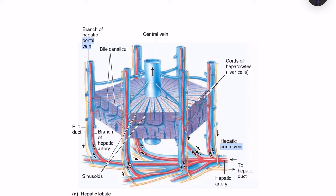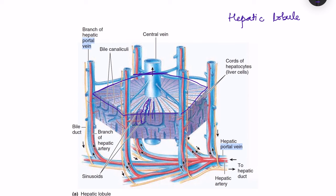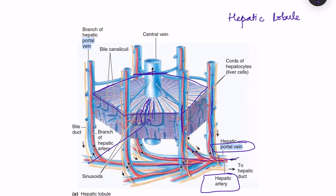This diagram shows a hepatic lobule, which is a hexagonal structure. Within it, various hepatocytes are arranged as plates — two plates of cells with a bile duct in between. The hepatic artery brings oxygenated blood and the portal vein enters the liver, dividing into branches that go to the corners of this hexagon, forming hepatic arterioles and portal venules.